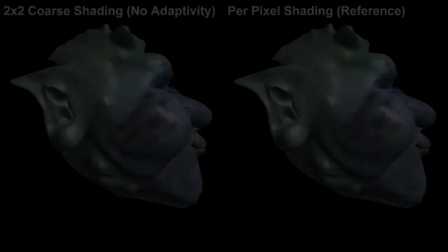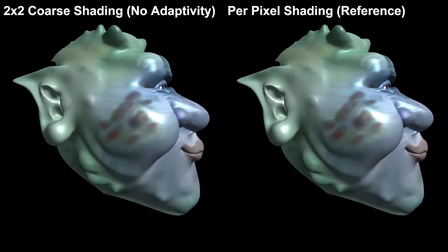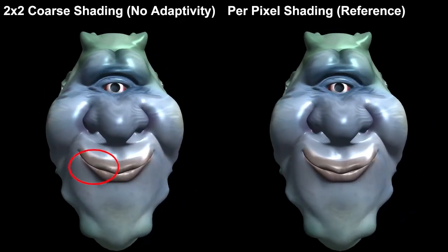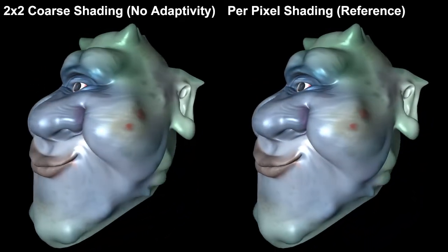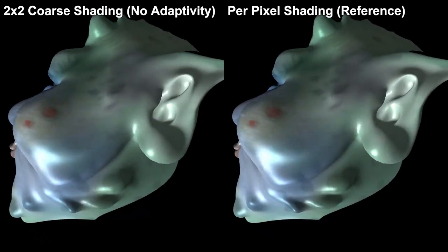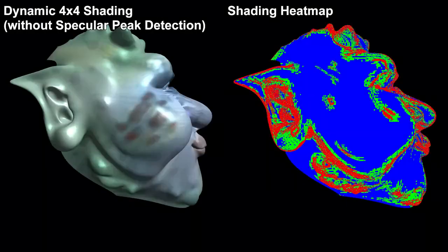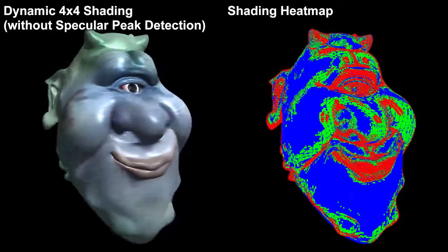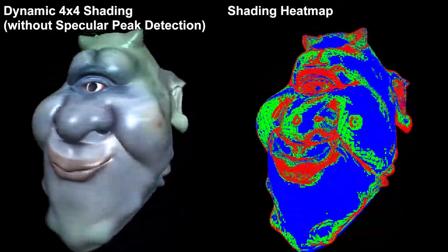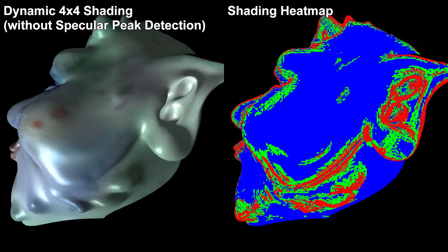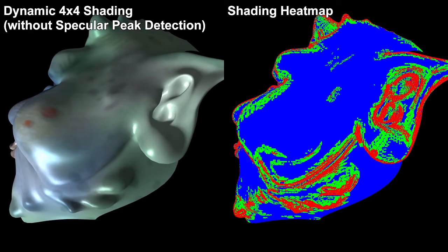We use the auger scene to test the adaptive shading of specular effects. Evaluating specular effects in a coarse shader without adaptivity produces aliasing artifacts near highlights. Refining areas of high surface curvature eliminates the artifacts, but results in unnecessary shading work in regions where high-frequency highlights are not present.